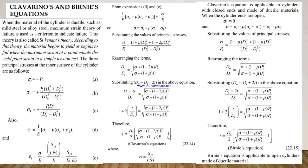Clavarino's and Birnie's equations are generally used to calculate the wall thickness of a cylinder, where sigma is the yield strength divided by factor of safety. Clavarino's equation is applicable only to cylinders with closed ends and is made for ductile materials. But when the cylinder ends are open, sigma_l equals zero, so sigma equals sigma_t minus mu times (sigma_r plus sigma_l), and putting sigma_l equal to zero, we get sigma equals sigma_t minus mu times sigma_r.